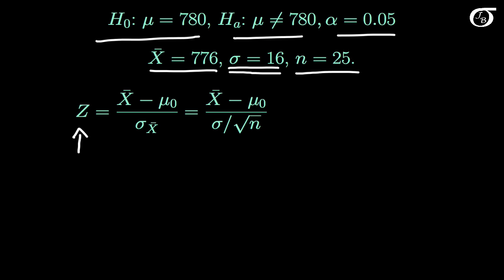We might see this z-test statistic written in one of two ways. Sigma X bar is just sigma over the square root of n. If we want the value of this test statistic, we take the sample mean, 776, we subtract the hypothesized value from the null hypothesis, which is 780, divide by sigma, which is 16, over the square root of the sample size of 25. This works out to minus 1.25.